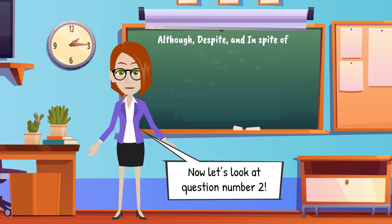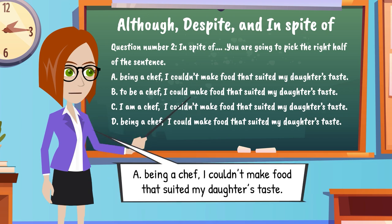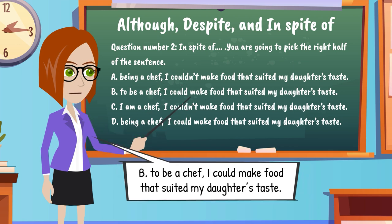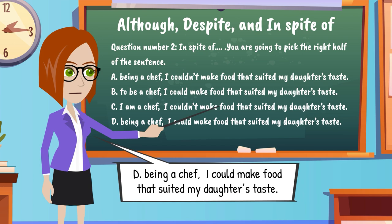Now, let's look at question number two. Question number two. In spite of, you are going to pick the right half of the sentence. A. Being a chef, I couldn't make food that suited my daughter's taste. B. To be a chef, I could make food that suited my daughter's taste. C. I am a chef. I couldn't make food that suited my daughter's taste. D. Being a chef, I could make food that suited my daughter's taste.